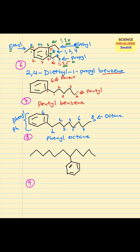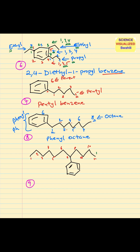Look at the next example — we have a straight chain. Counting from the right gives us eleven carbons, while counting from the left also gives eleven. If you count from the right (blue), the substituent is at position number five. If you count from the left (red), the substituent is at position number seven. We want the lowest number possible, so position number five. On position number five we have a phenyl group, and the chain has eleven carbons — that's called undecane. The name will be 5-phenylundecane.